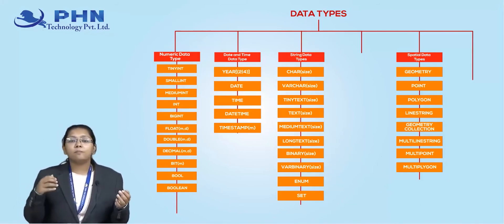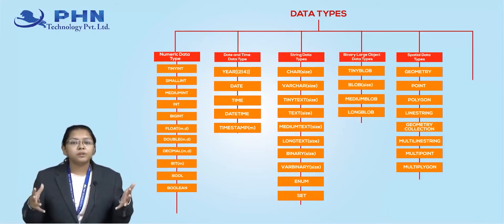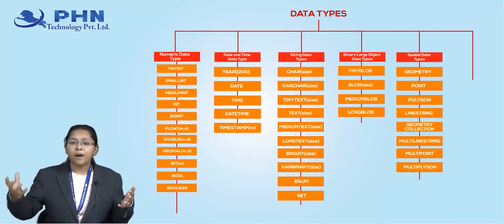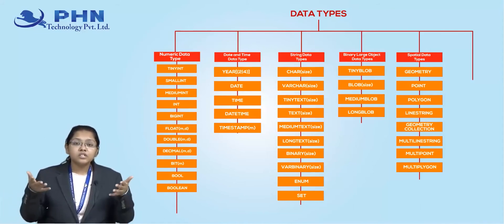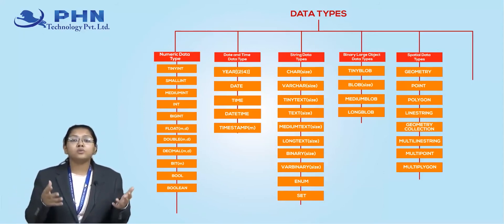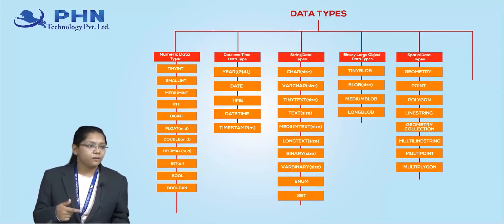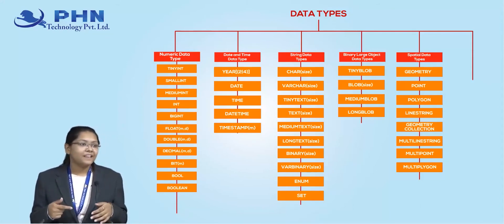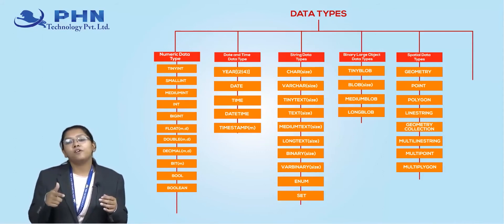Another type is binary data types. Binary stores variable amounts with a certain byte size — 2 byte, 4 byte, 6 byte, 8 byte, and so on. If you want to store larger variable amounts, then you have to use these binary data types.